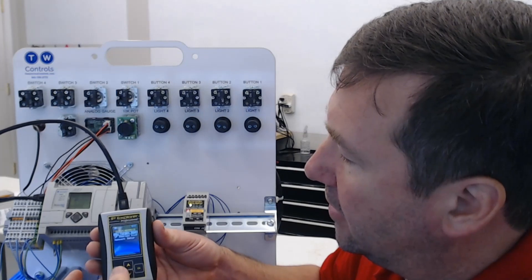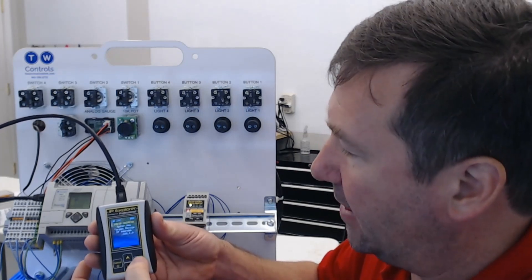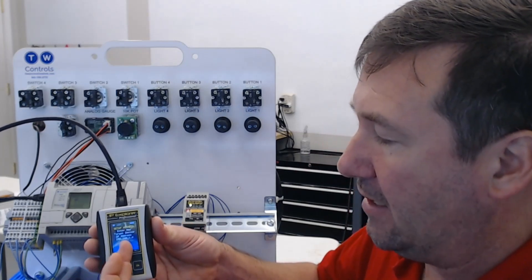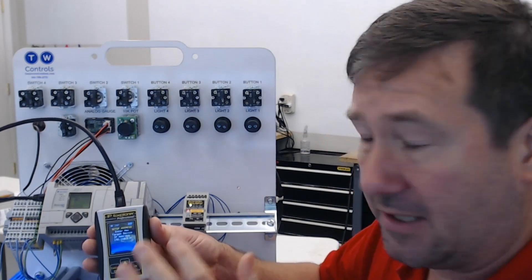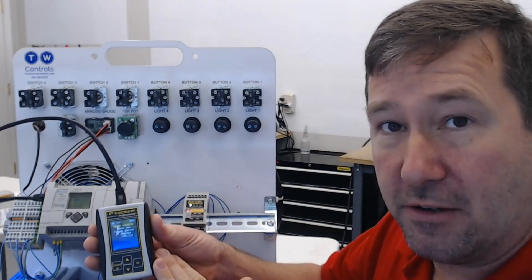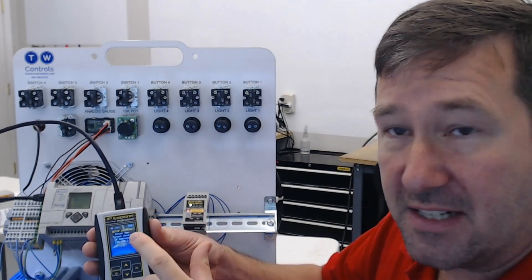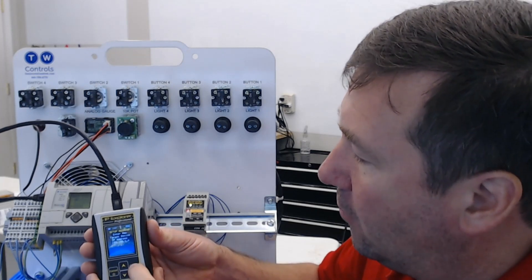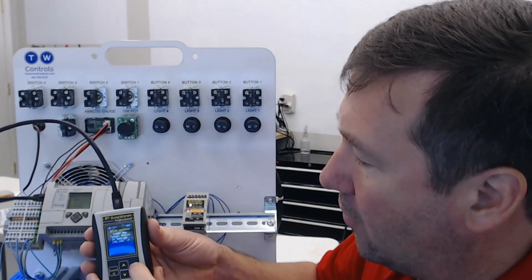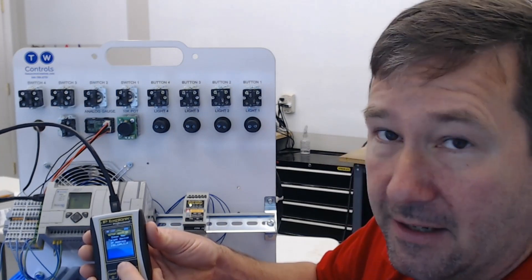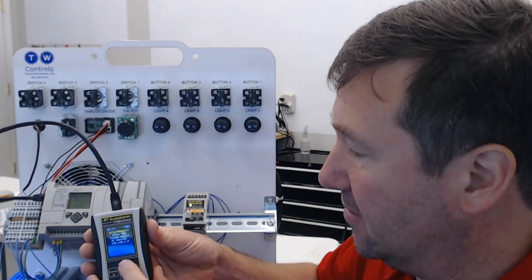So now we're going to set a new target IP address. It already has filled in the first three octets based off of what we configured this for. So it's 192.168.1. All we need to do is set that fourth octet to 10, which is what I want this PLC to be.